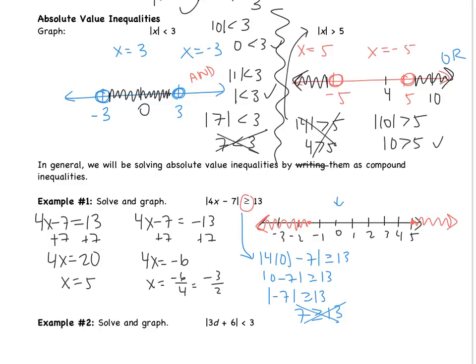Since the graph is shaded outside, this is an or statement. The solution is: x is less than negative 3 over 2 or x is greater than 5.